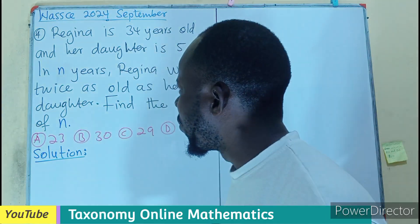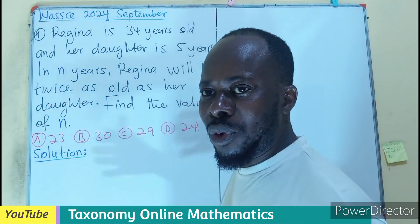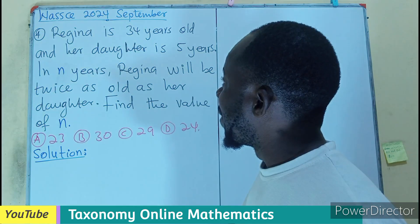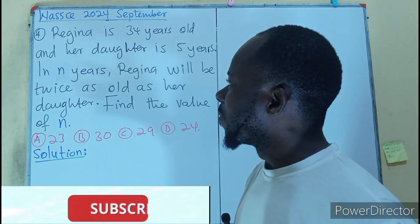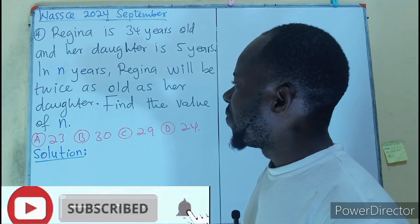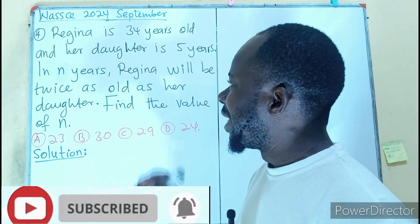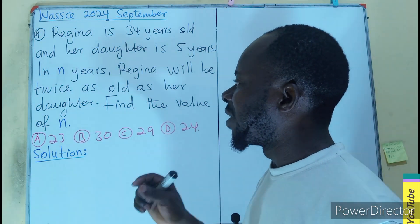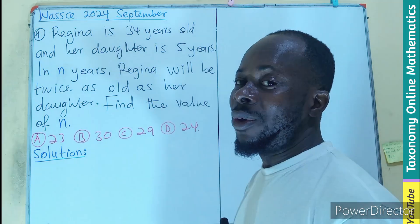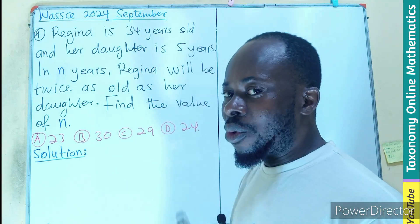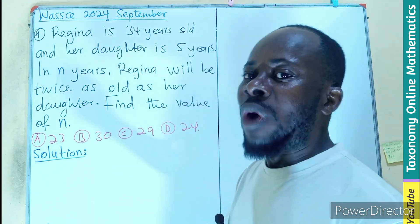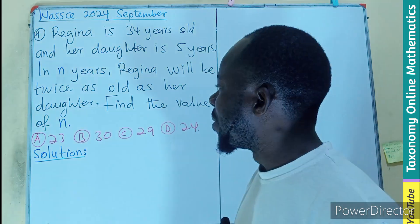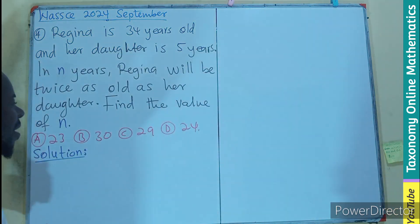Let's look at this word problem from the WASSCE 2024 September edition. Regina is 34 years old and her daughter is five years old. In n years, Regina will be twice as old as the daughter. We have to find the value of n — in how many years will the age of Regina become twice the age of the daughter? This is a simple word problem, so let's represent them by variables.